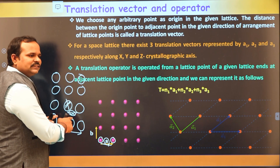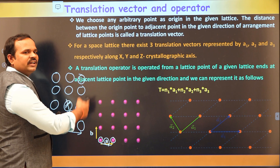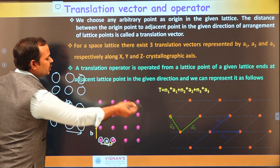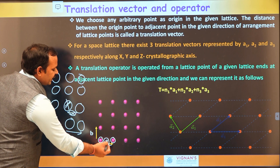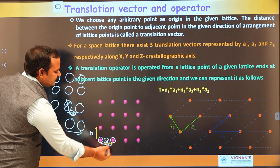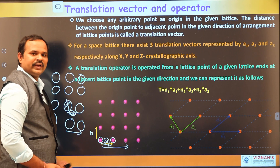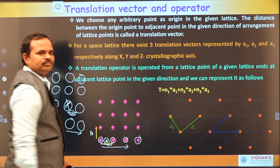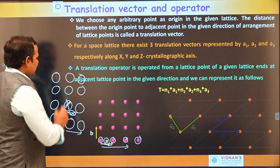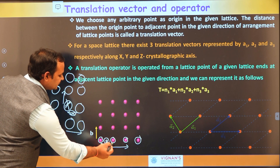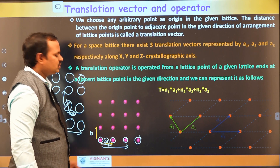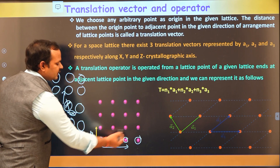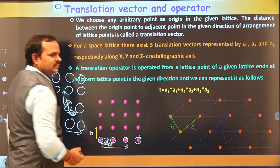Since in a crystal the atoms are arranged regularly and periodically in three dimensions, if we repeat the points with distance A in the x-direction we get more points. This is the translational vector, and by using this translational vector and operator we can generate all other points in the lattice.